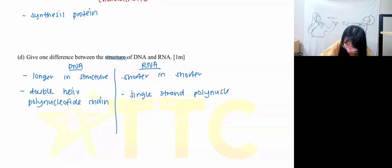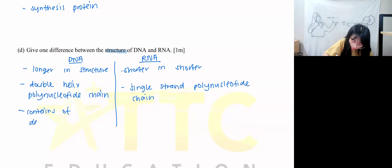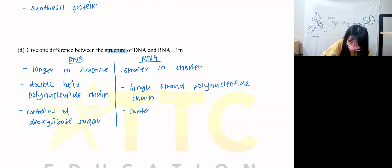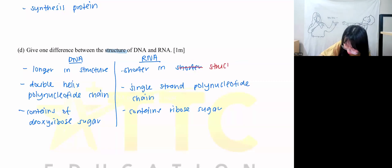We can also talk about the sugar. For DNA it contains deoxyribose sugar, and RNA contains ribose sugar. RNA is shorter in structure.